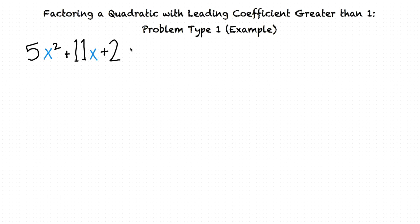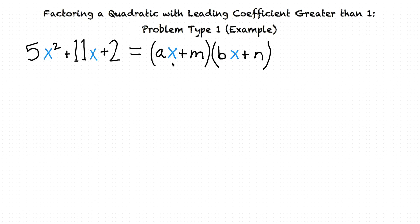When we factor this, that means we'll rewrite it as two binomials multiplied together. These two binomials will have the form (ax + m)(bx + n), where a, b, m, and n are numbers we need to figure out in order for this expression to equal our original expression after we multiply these binomials together.